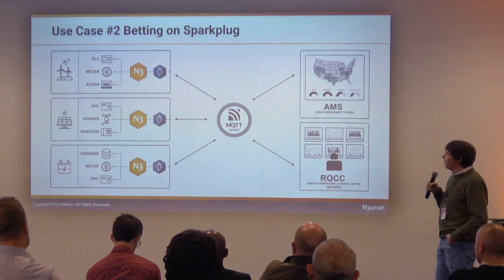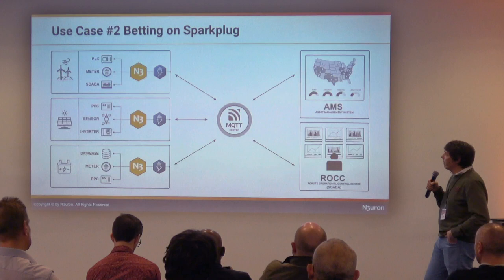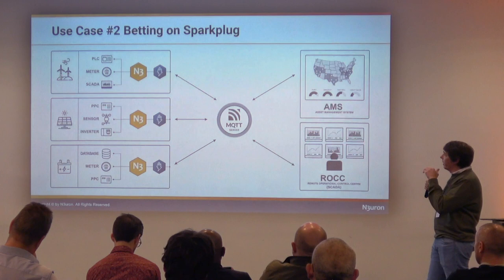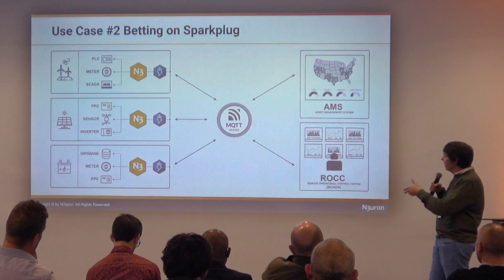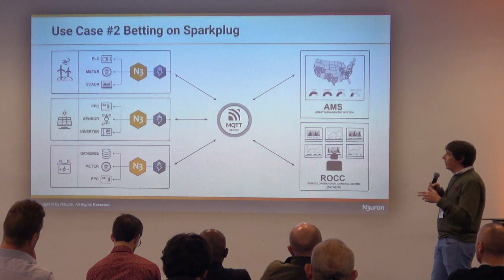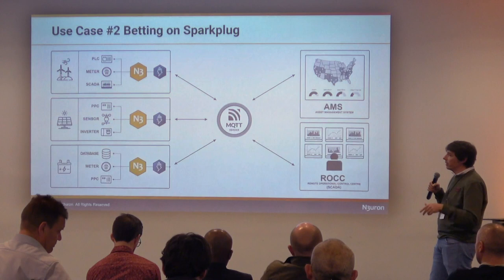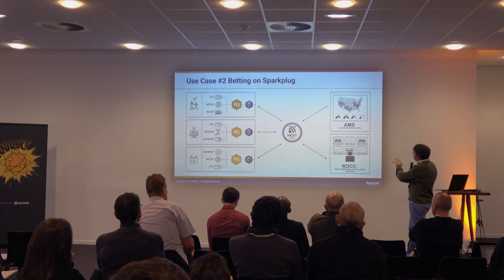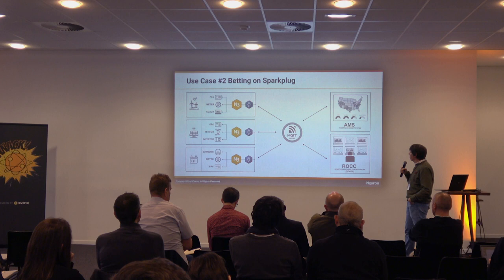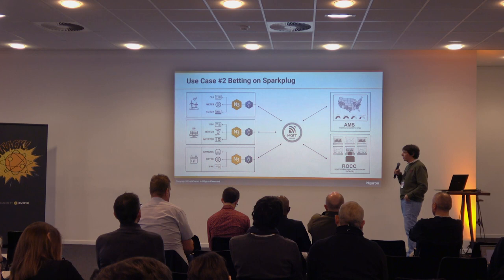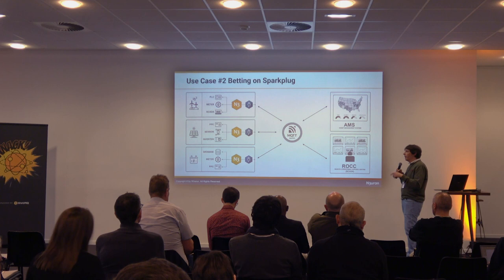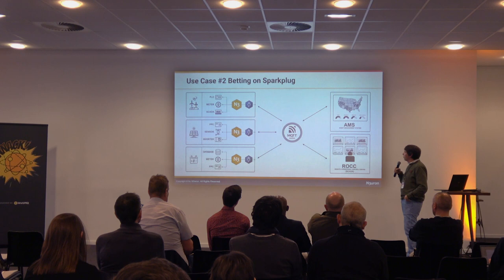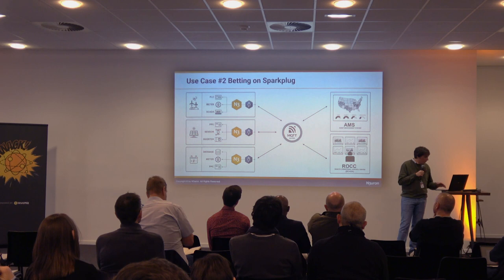This second use case is a multinational company in the USA with plants mainly in California and also in Mexico. This client specified Sparkplug from the beginning, because they have a well-known SCADA in their remote operational control center in California. They connect to all the devices and systems in the plant using different Neuron modules and exchange data with the broker via Sparkplug. They also added another host application — a software-as-a-service platform for asset management — which, when they chose that provider, didn't yet have Sparkplug implemented, and asked them to implement it in order to start using it.